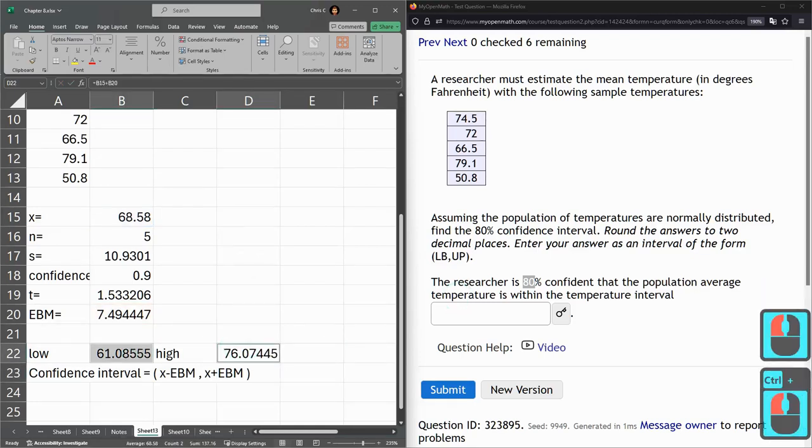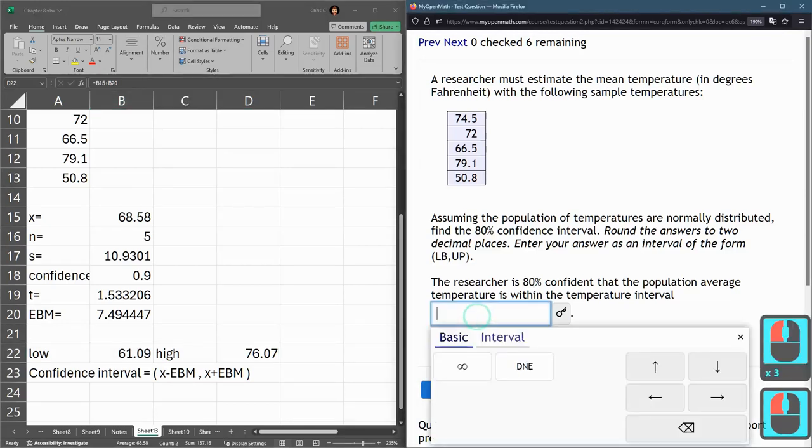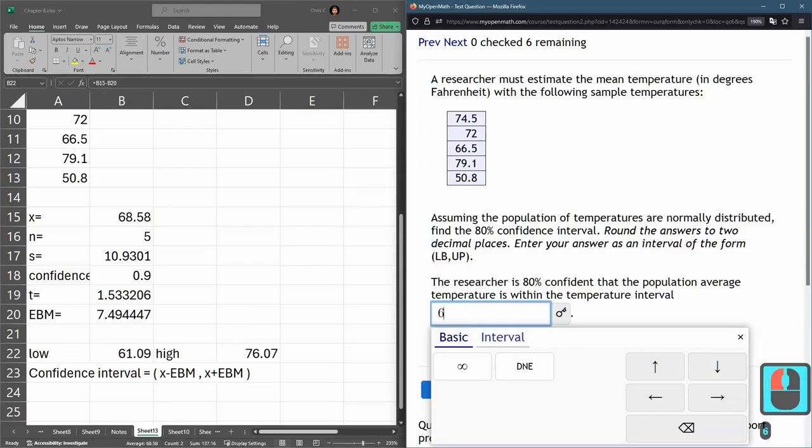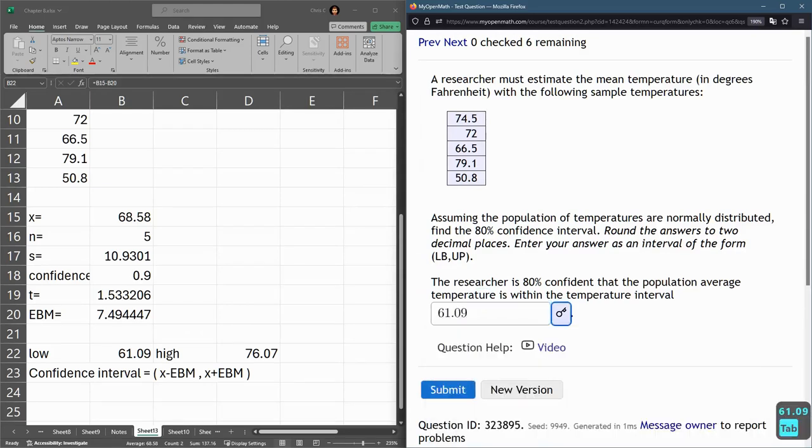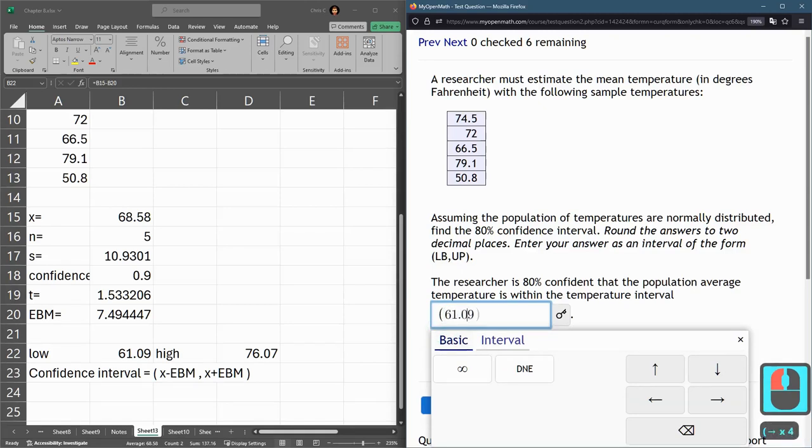This probably wants rounding two decimal places. So let's go and number two decimal places. All right. Again, I did a control to highlight both of them. 61.09. Oops. It says enter your answer in the form. We would go left parenthesis, lower bound, comma, upper bound, 76.07, and then end parenthesis.